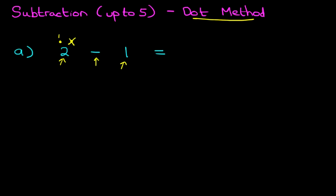So how many dots does that leave? Well, now we simply count them. One. It is one dot. So 2 minus 1 equals 1. 2 minus 1 equals 1.